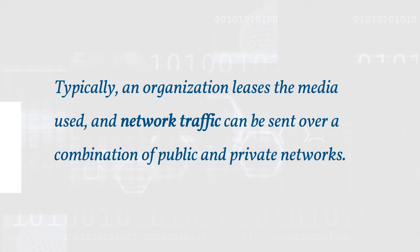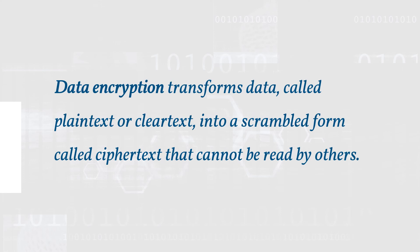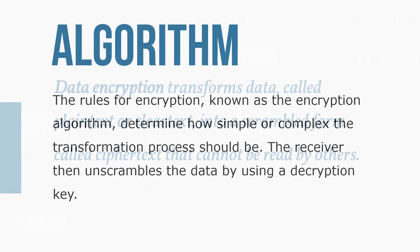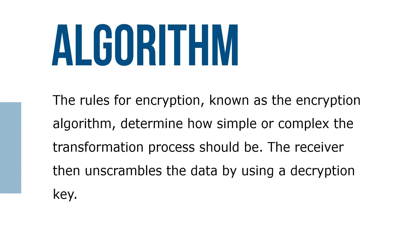Data encryption transforms data — called plaintext or clear text — into a scrambled form called ciphertext that cannot be read by others. The rules for encryption, known as the encryption algorithm, determine how simple or complex the transformation process should be. The receiver then unscrambles the data by using the decryption key.